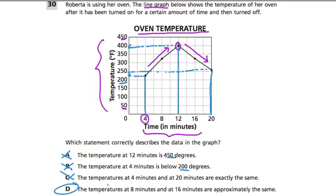And the answer must be D. But let's take a look at it. The temperature at 8 minutes and at 16 minutes are approximately the same. So they're about the same. Well, let's follow it up. At 8 minutes, we go up and here we hit the line. If we follow it over, we get between 300 and 350.